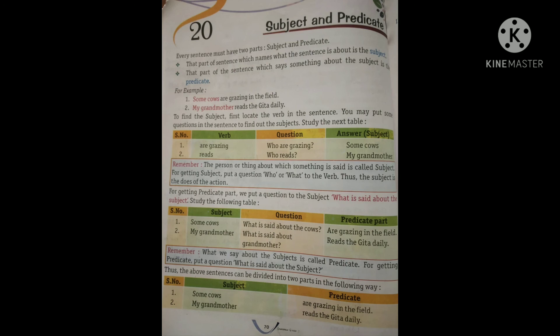I will give you one more example out of the textbook. Suppose, the boy is standing near the tree. Toh sentence kis ke baare mein hai? The boy ke baare mein. Toh the boy hua subject, aur is standing near the tree hua predicate.